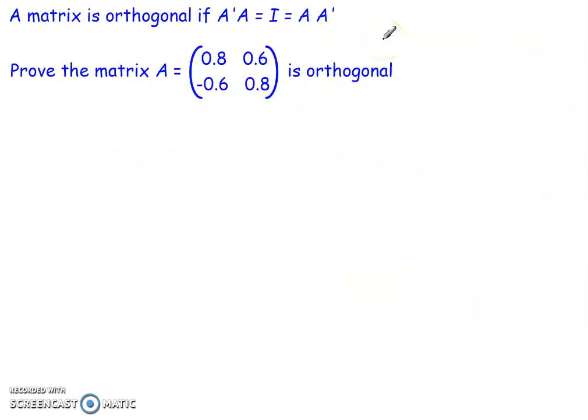One last thing: orthogonality of a matrix is important. A matrix is orthogonal if the transpose of A multiplied by A gives the identity matrix. This is actually one of those rare cases where we can also swap the order and get the same result: A times the transpose of A also equals I.